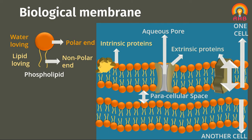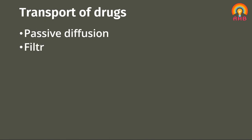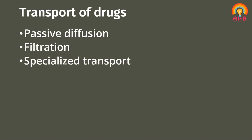Now we will see how transport of drugs takes place. Drugs are transported across the cell membrane by different processes like passive diffusion, filtration, and specialized transport processes.